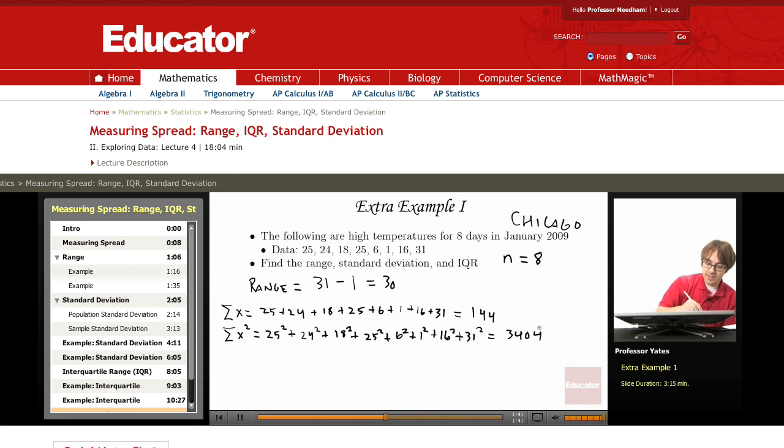So s is going to be my standard deviation. I'm taking the square root of 3,404 minus 144 squared divided by 8, and that whole thing divided by 7, making sure that 7 is included in the square root sign. You should get 10.27827.